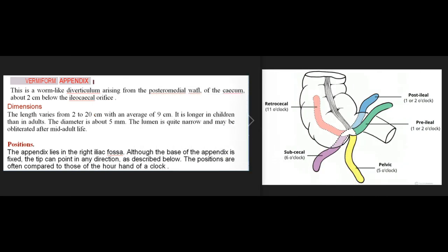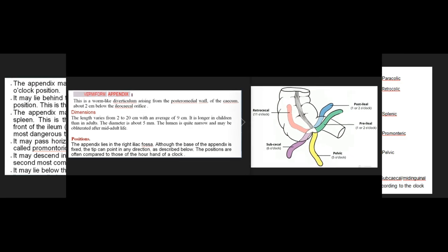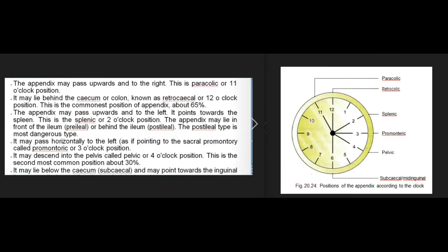The vermiform appendix is a worm-like diverticulum arising from the posteromedial wall of the cecum, about two centimeters below the ileocecal orifice. Its length varies from two to twenty centimeters with an average of nine centimeters; it is longer in children than in adults. The diameter is about five millimeters, and the lumen may be obliterated after mid-adult life. The appendix lies in the right iliac fossa, and its tip can point in various directions compared to positions on a clock face. The paracolic (11 o'clock) position passes upwards and to the right.